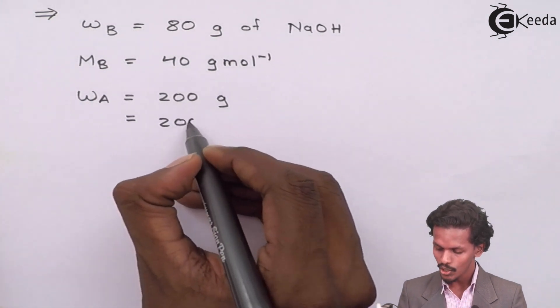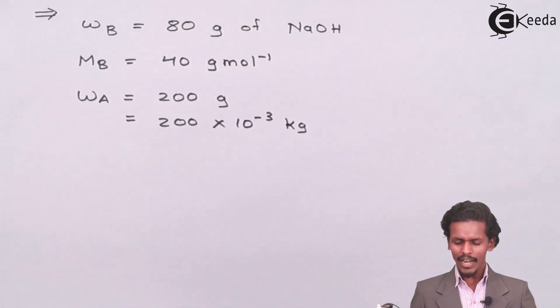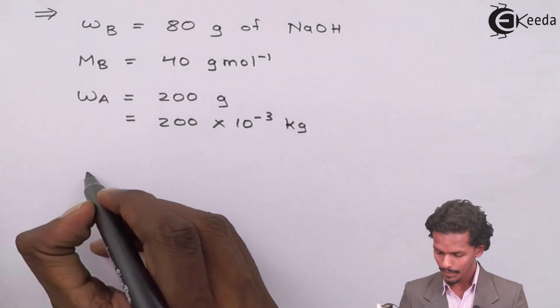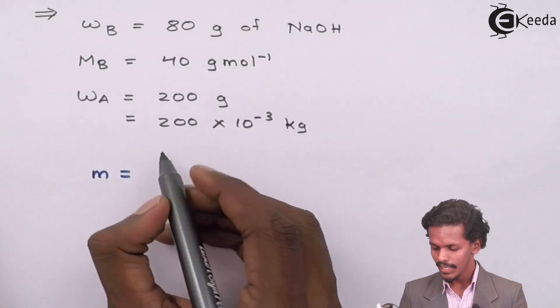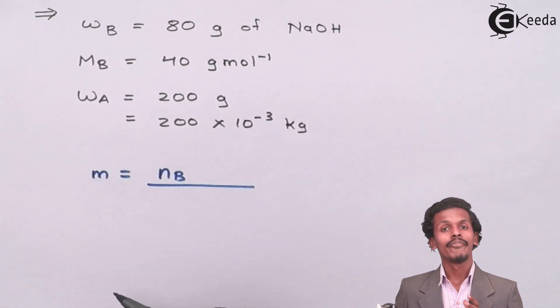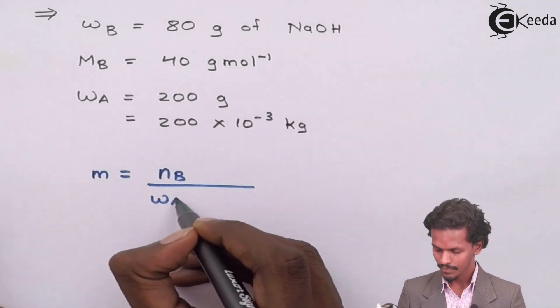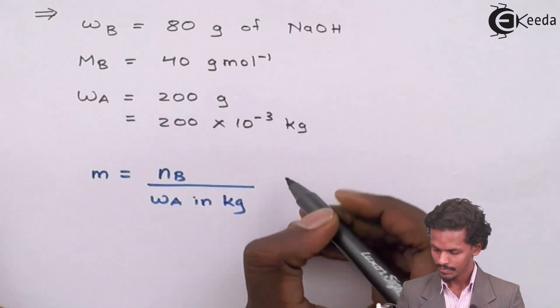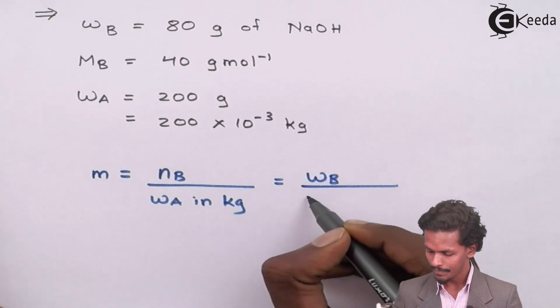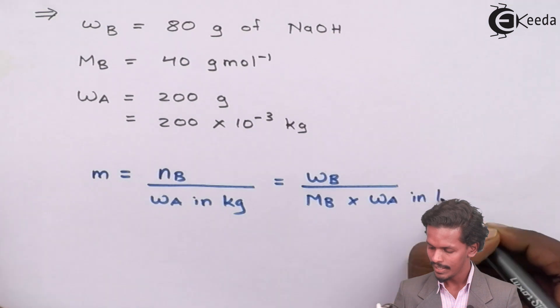We know the formula of molality as it is the number of moles of solute dissolved in weight of solvent in kg. So therefore NB is nothing but WB divided by MB × WA in kg.